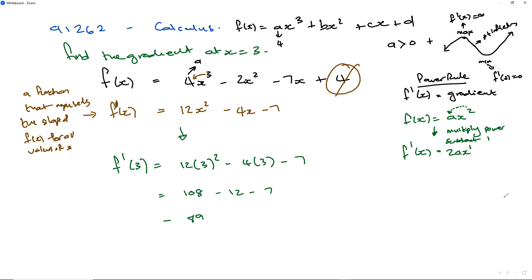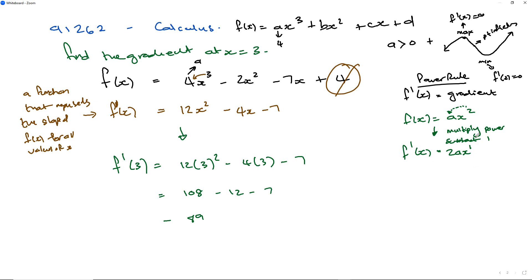When we sketch this function, we can make x equal to 0 to find the y-intercept, which gives y equals 4. That's our y-intercept. Another possibility is to make the gradient equal to 0, which gives us our turning points — those coordinates where the function turns. So I take f'(x) and set it equal to 0, implying that 12x squared minus 4x minus 7 equals 0. This means my gradient, or slope, is equal to 0 at those turning points.